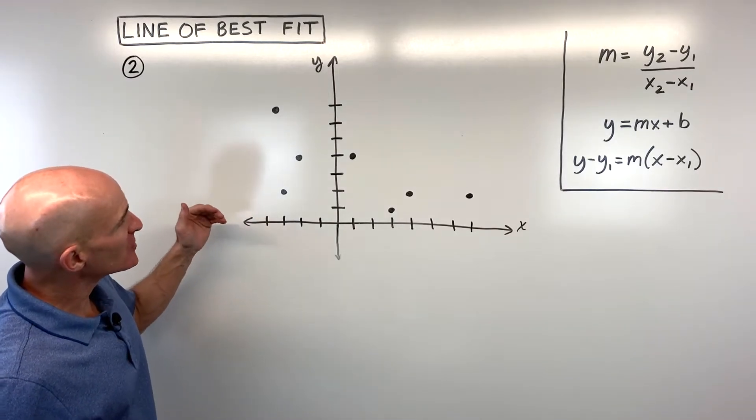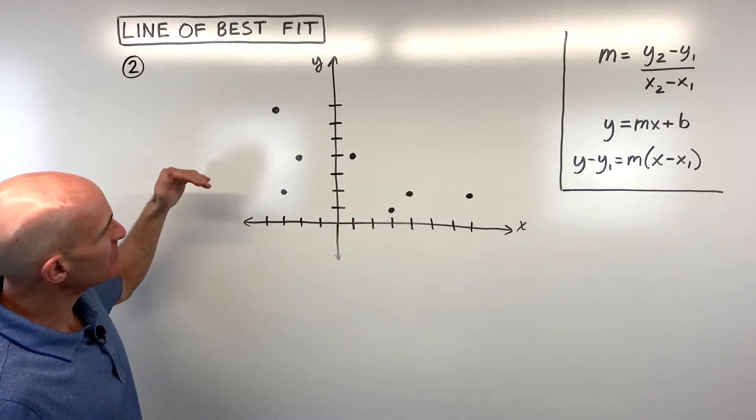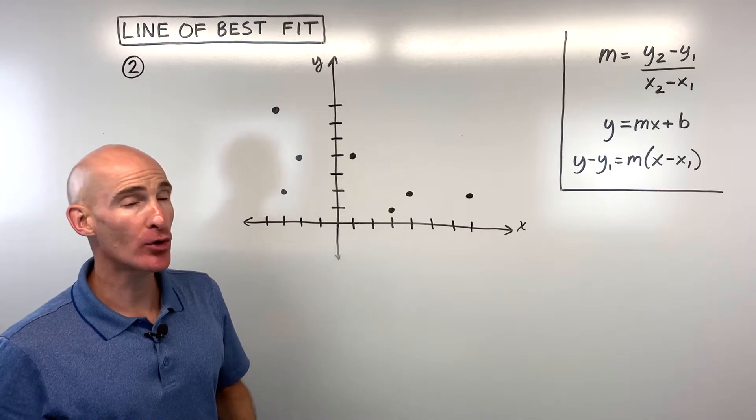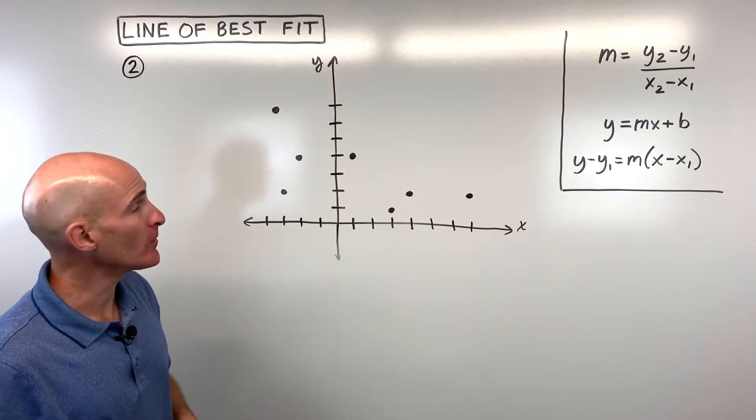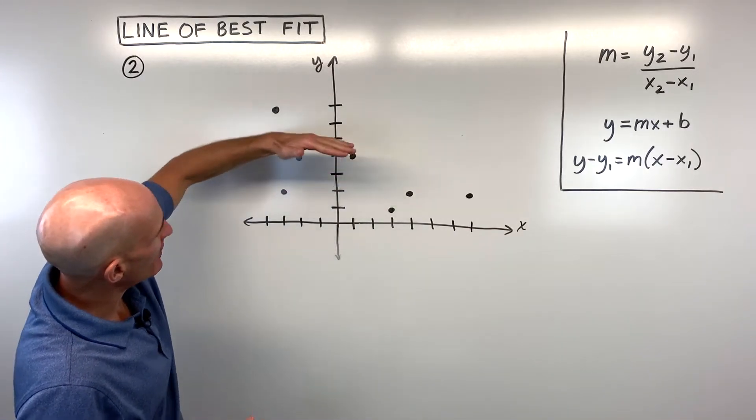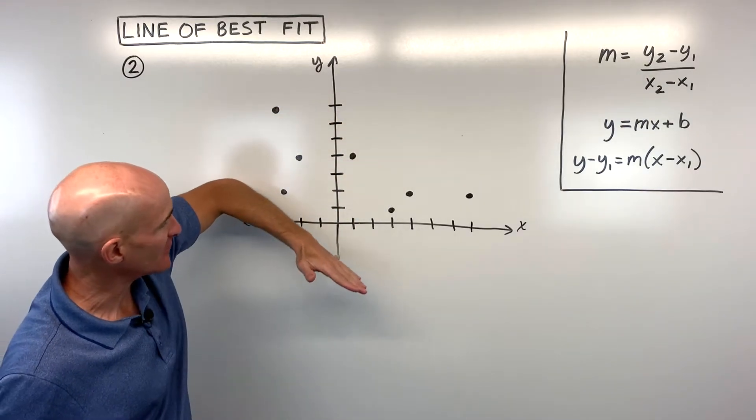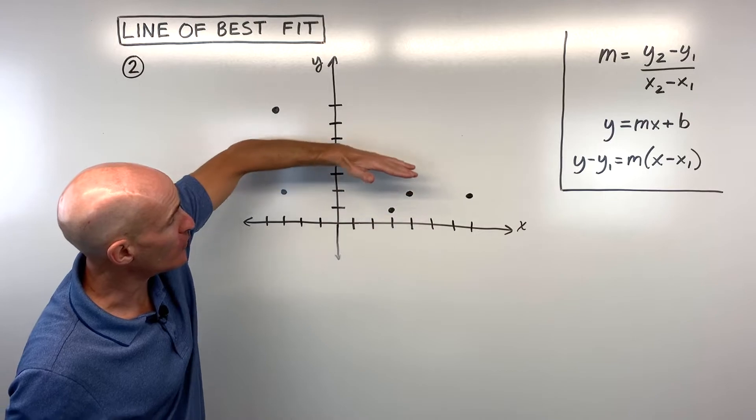If I was going to do this problem, I would look at these points, and it looks like to me that this is trending down to the right. This is what we call a negative correlation, or it has a negative r value. And if I was going to draw my line of best fit, again, I don't want it so high that all the points are below that line of best fit. I don't want the line so low that all the points are above.